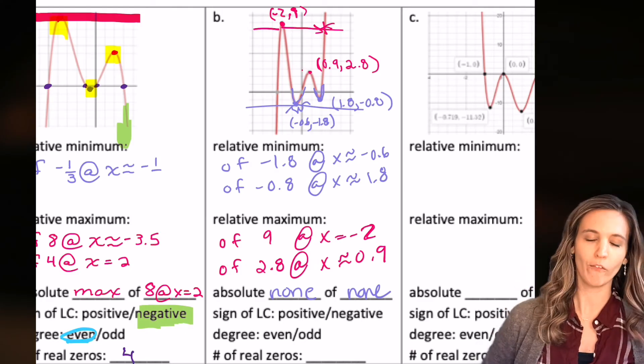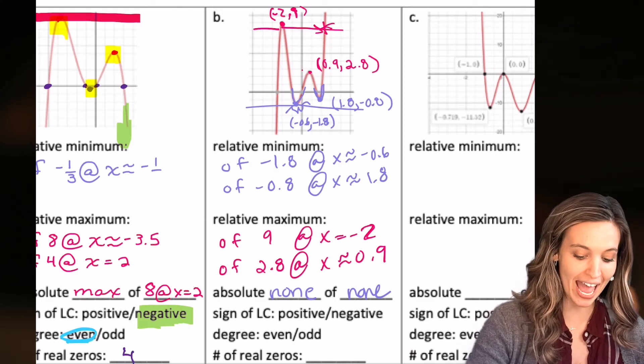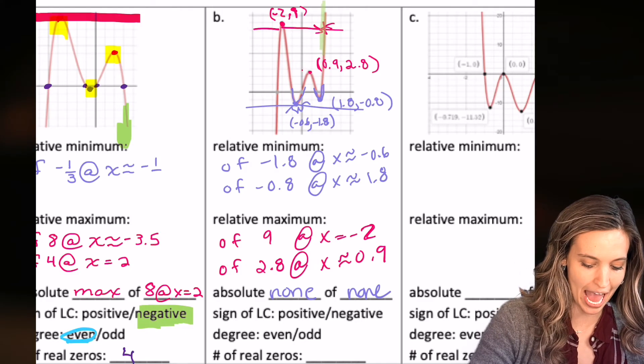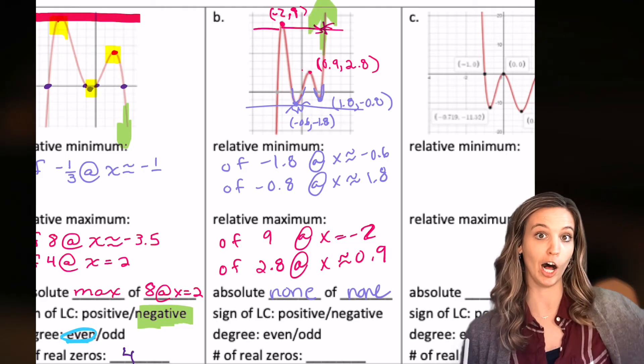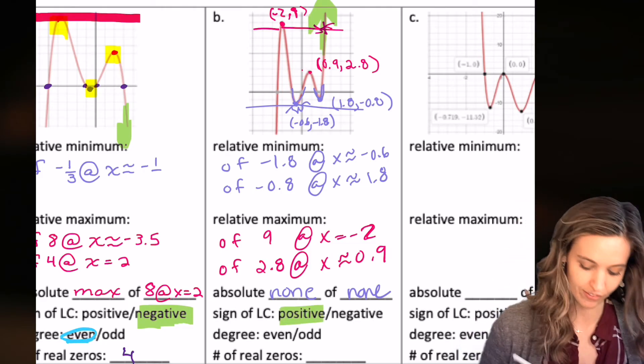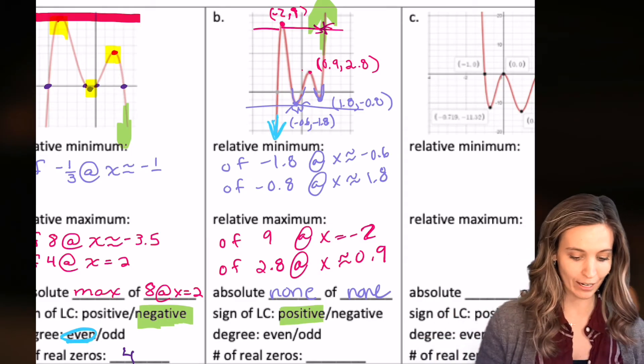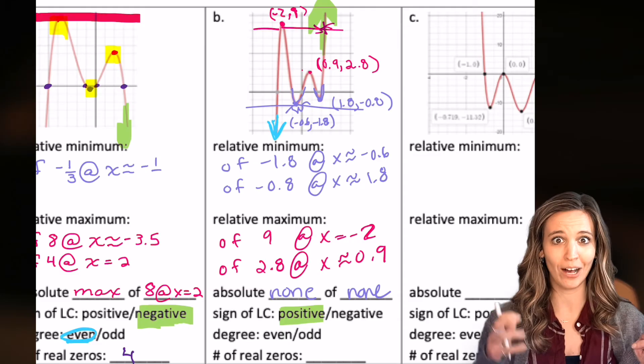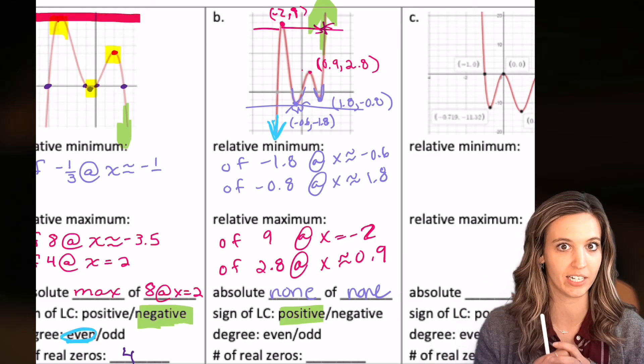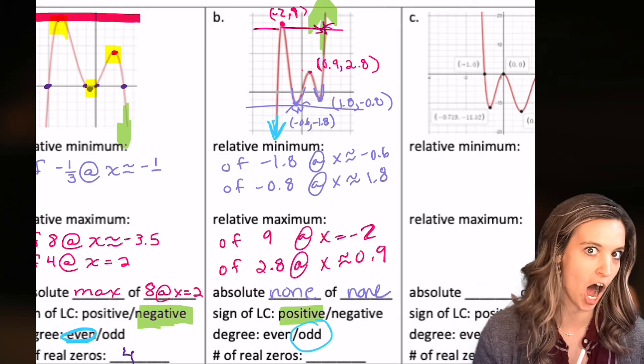Sign of the leading coefficient. So that's determined by my end behavior. My end of my graph is headed up in the positive direction. So I know I have a positive leading coefficient. Now for the degree, how does the graph start? It's headed down. So I've got a down up. So they're opposite. So my degree is going to be odd.